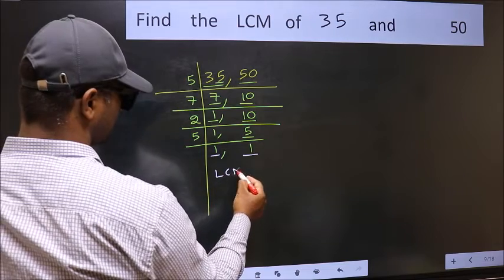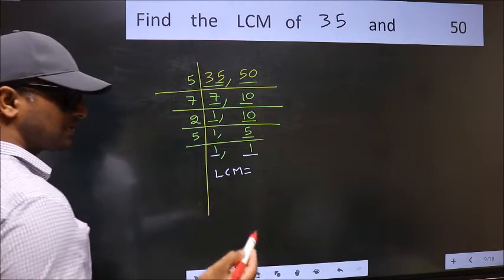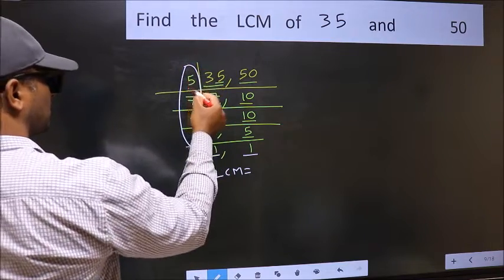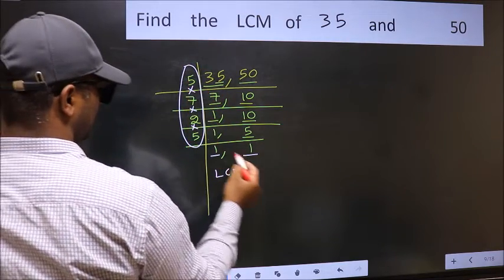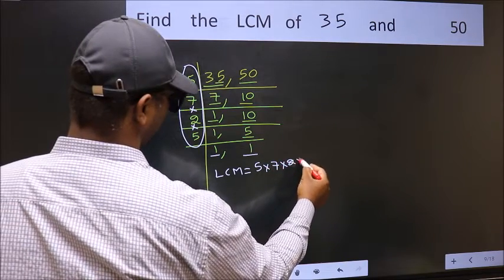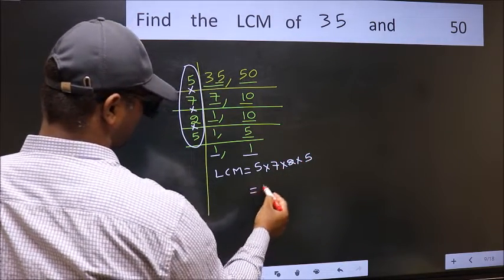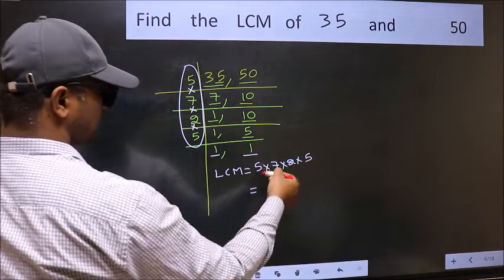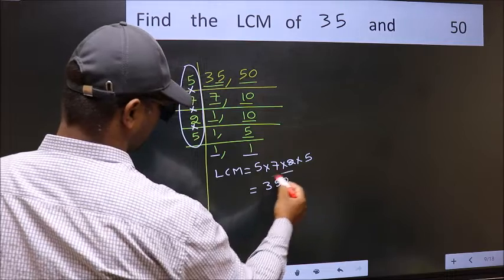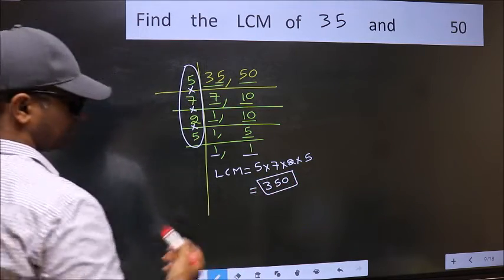So our LCM is the product of these numbers. That is 5 into 7 into 2 into 5. When we multiply these numbers, we get 350 as our LCM.